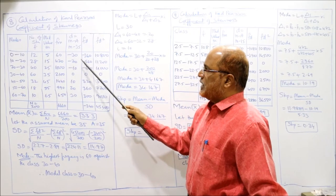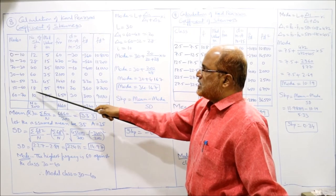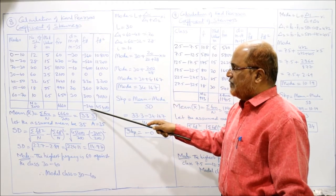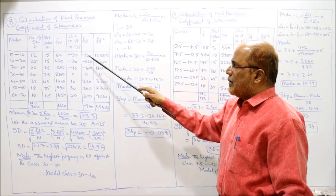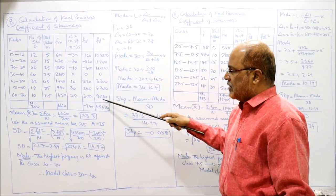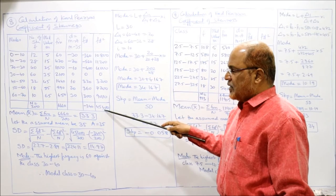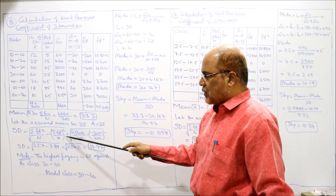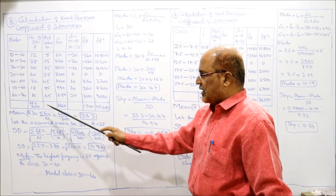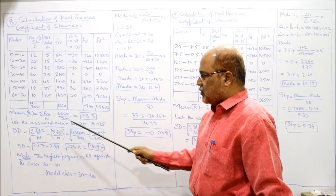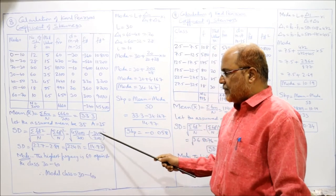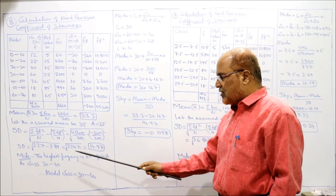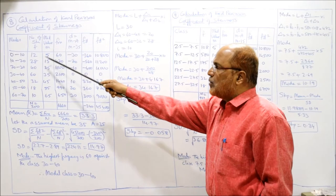Multiplying frequency × deviation: 12×(−30) = −360, 28×(−20) = −560, and so on. Total Σfd = −340, and Σfd² = 45400. Standard deviation = √(45400/200 − (−340/200)²) = 14.97. The highest frequency is 60 against class interval 30 to 40, so modal class = 30 to 40.